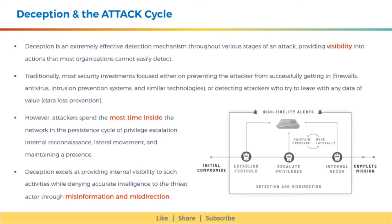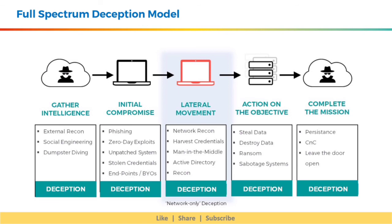This brings us to the full-spectrum deception model, which shows the end-to-end deception process. It includes gathering intelligence by the attacker, then the attacker makes an initial compromise, perhaps via phishing or stolen credentials. Once inside the network, the attacker falls prey to decoys, deceptions, or breadcrumbs laid down by the security team. Believing it is a real environment, the attacker continues with activities of stealing or destroying data, or performing ransom — but little does the attacker realize they are following a trap. The security team collects all details, blocks all paths, and gathers intelligence about the attacker.